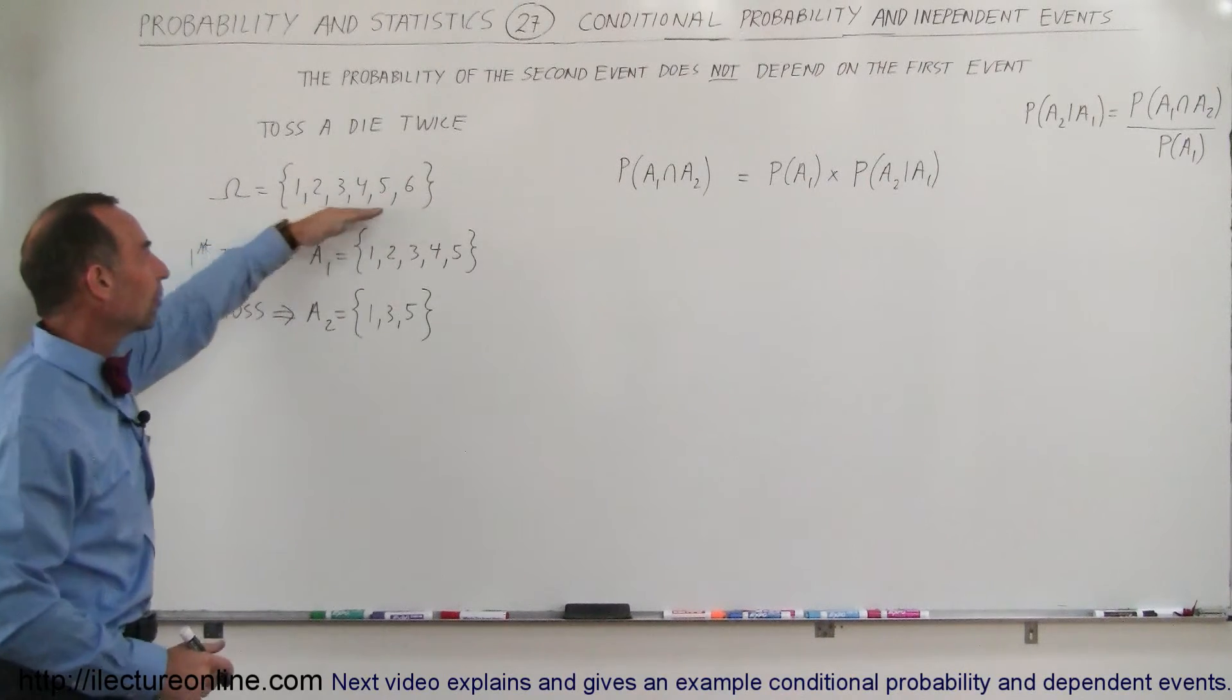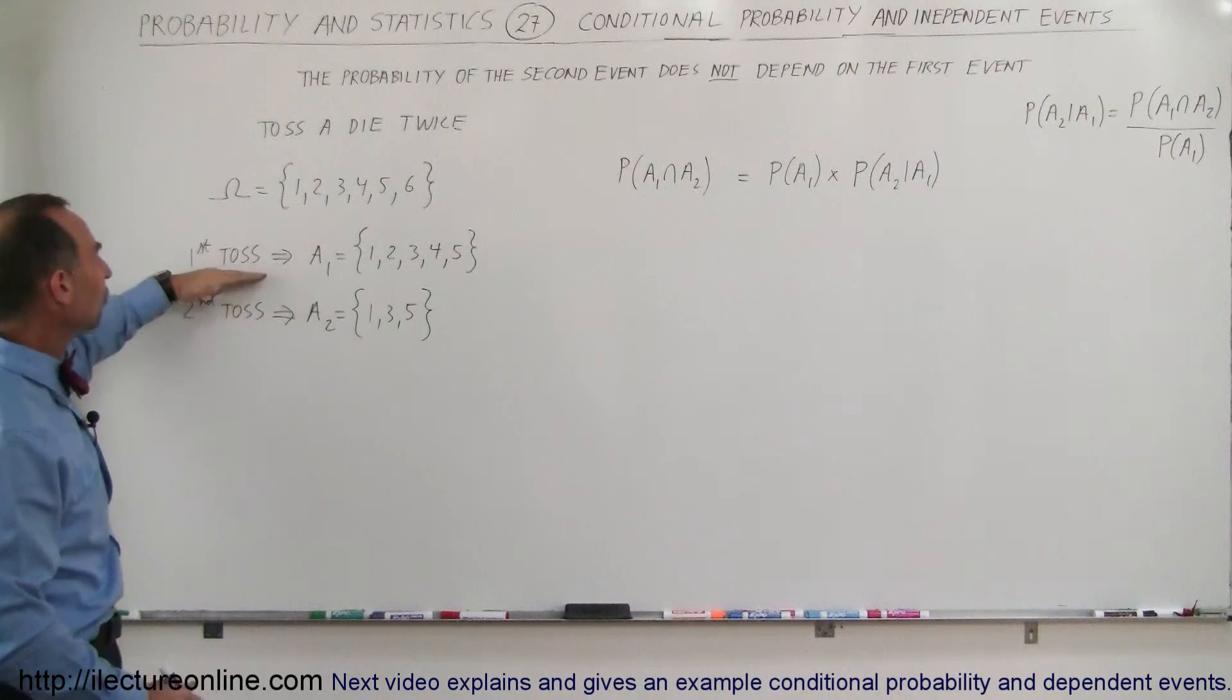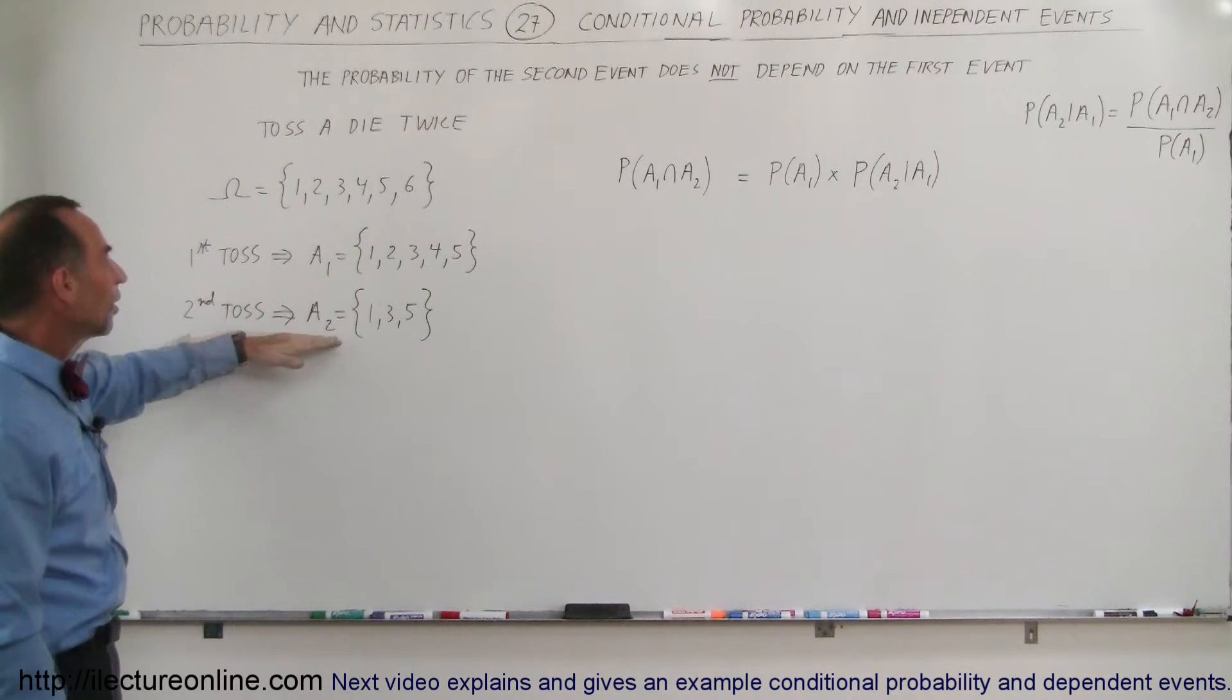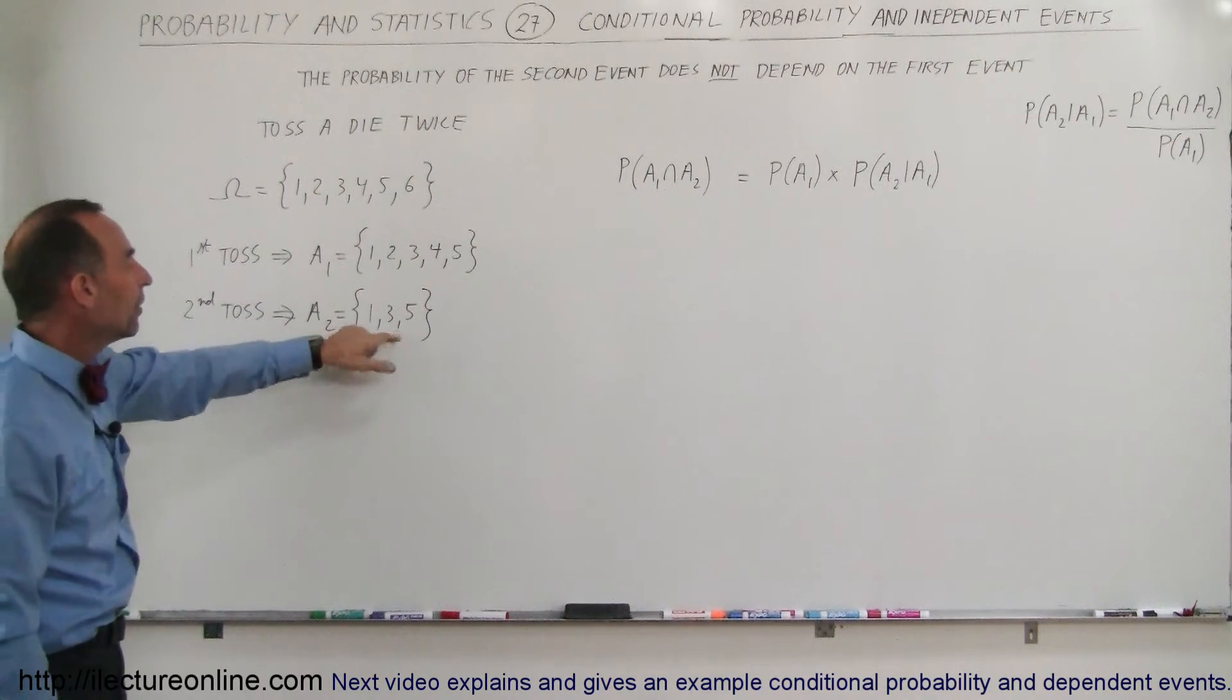The sample space, of course, is all the numbers on the die. And the first toss, the event, is a number less than 6. The second event is an odd number.